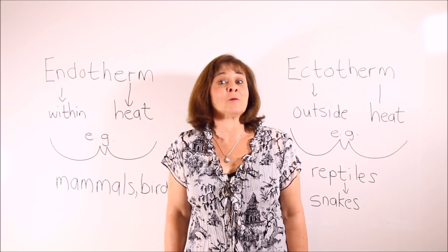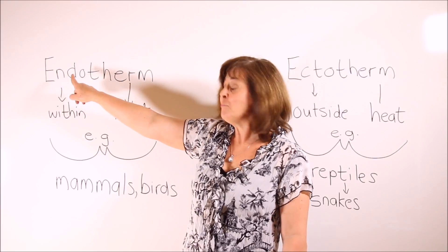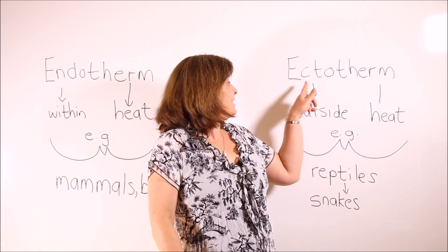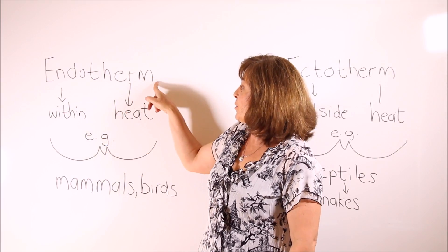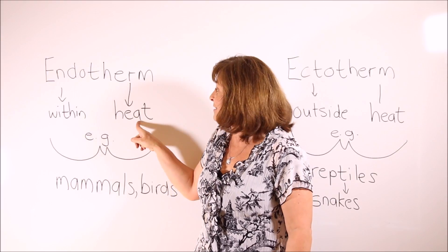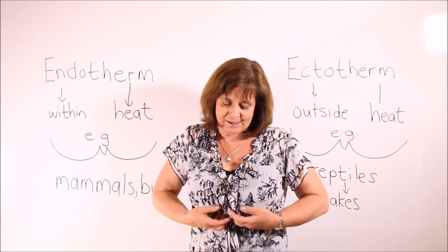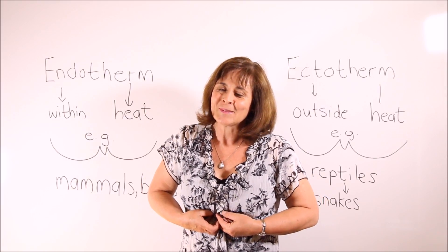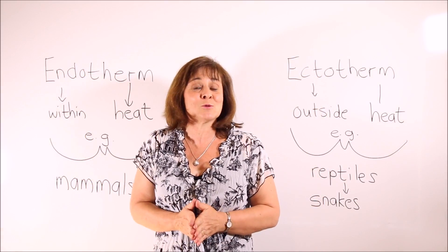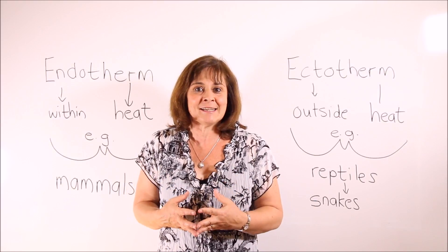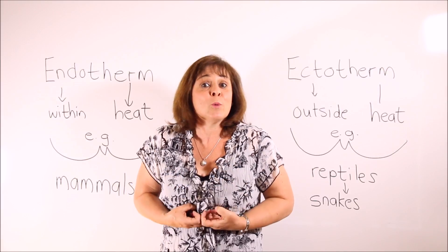Let's move on from diet to temperature. Our two words that relate to temperature are endotherm and ectotherm. 'Endo' means within, and 'therm' comes from a Greek word that means heat. So an endotherm is an animal that generates its own heat from within. Examples would be mammals and birds — they don't need outside sources of energy to generate heat; their body heat is generated from within.